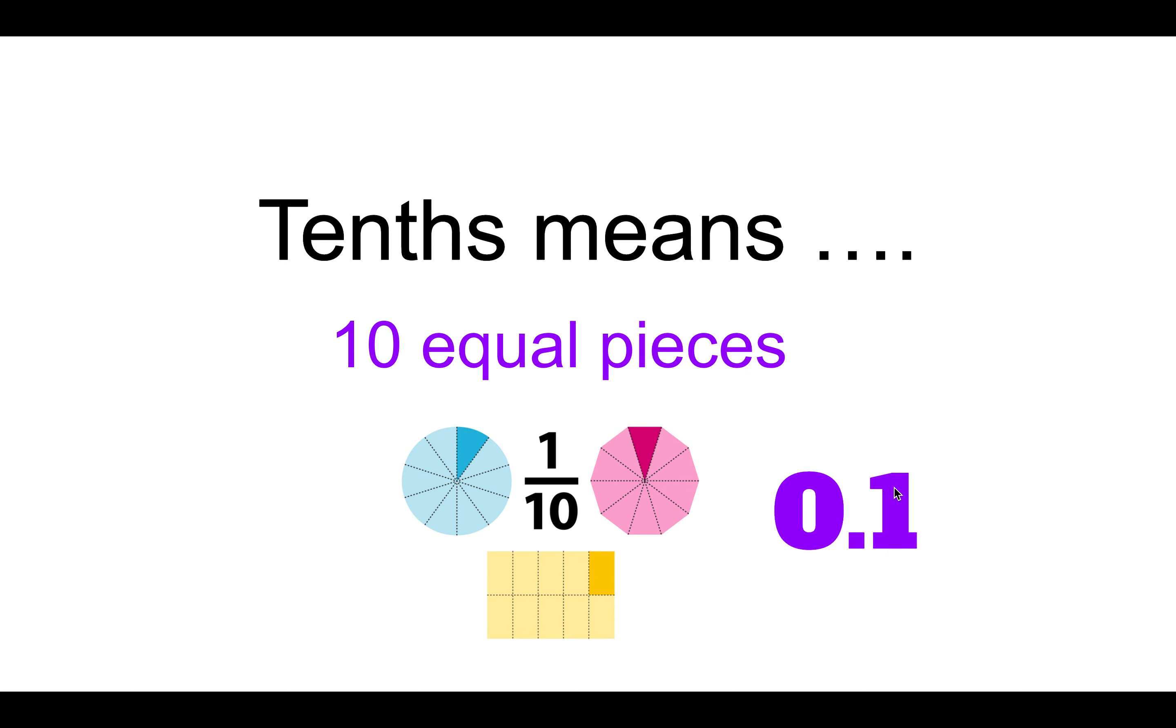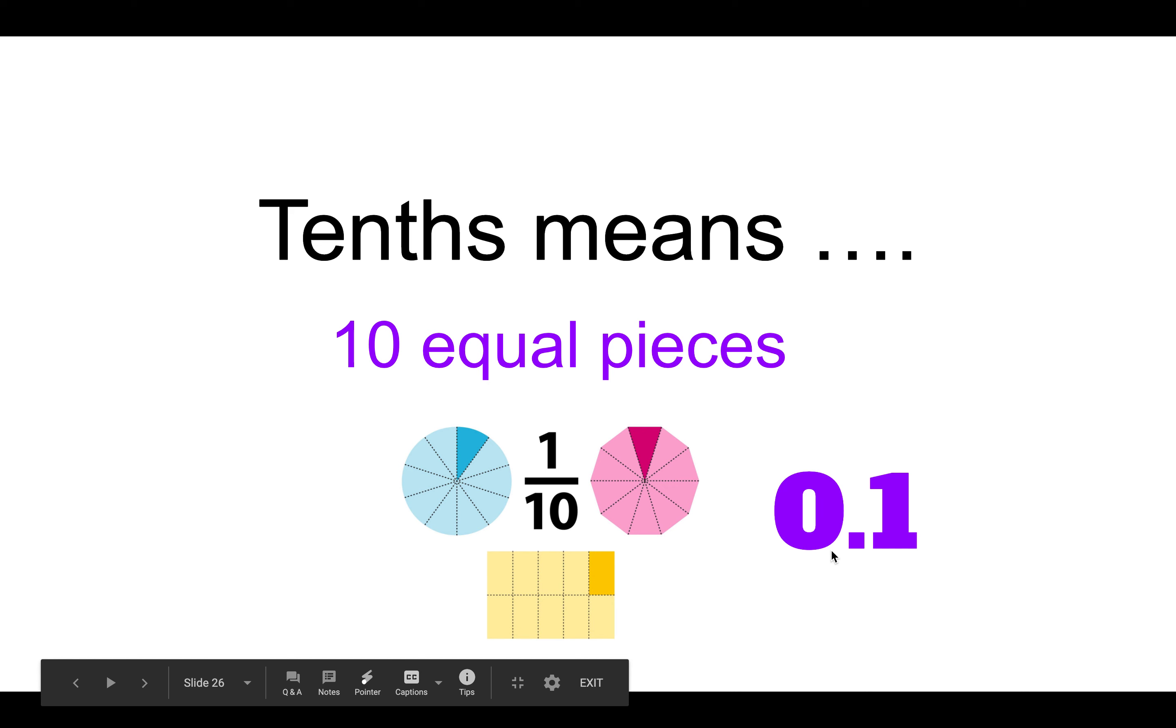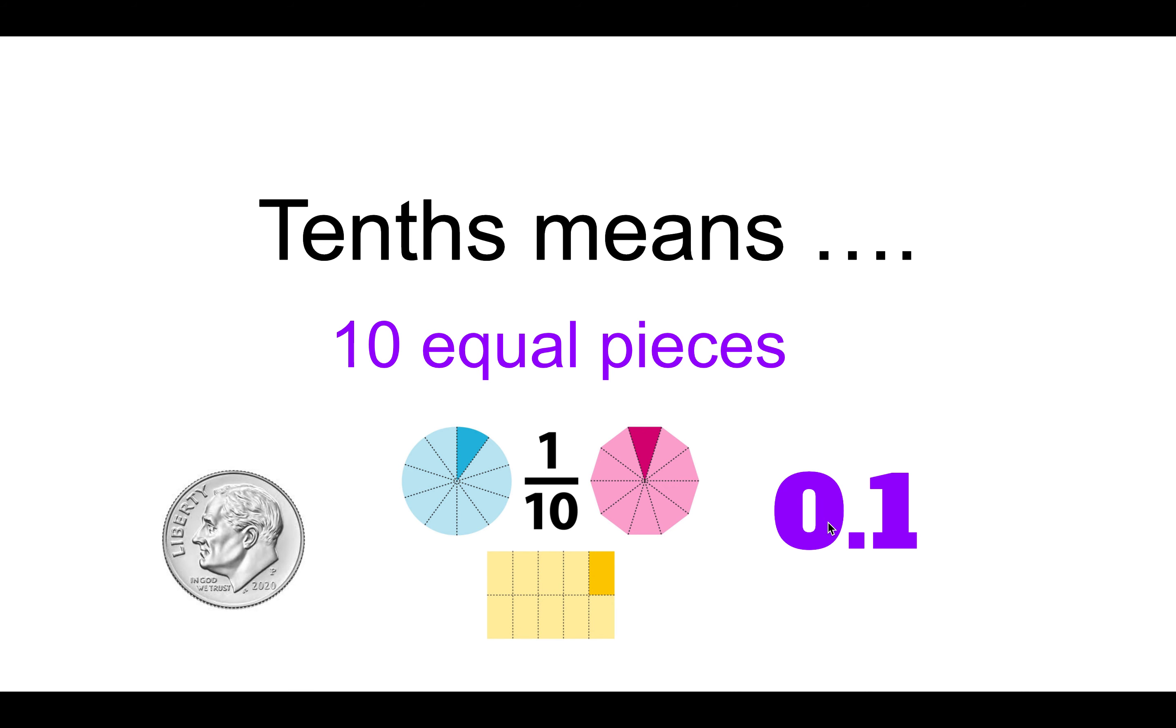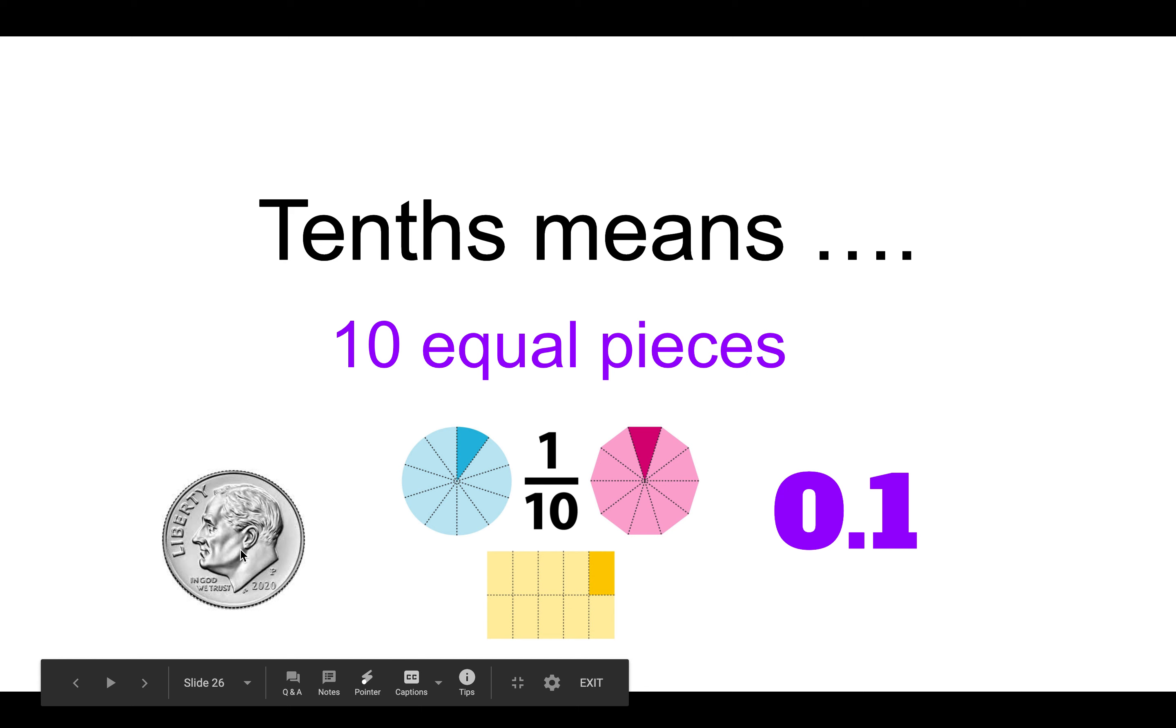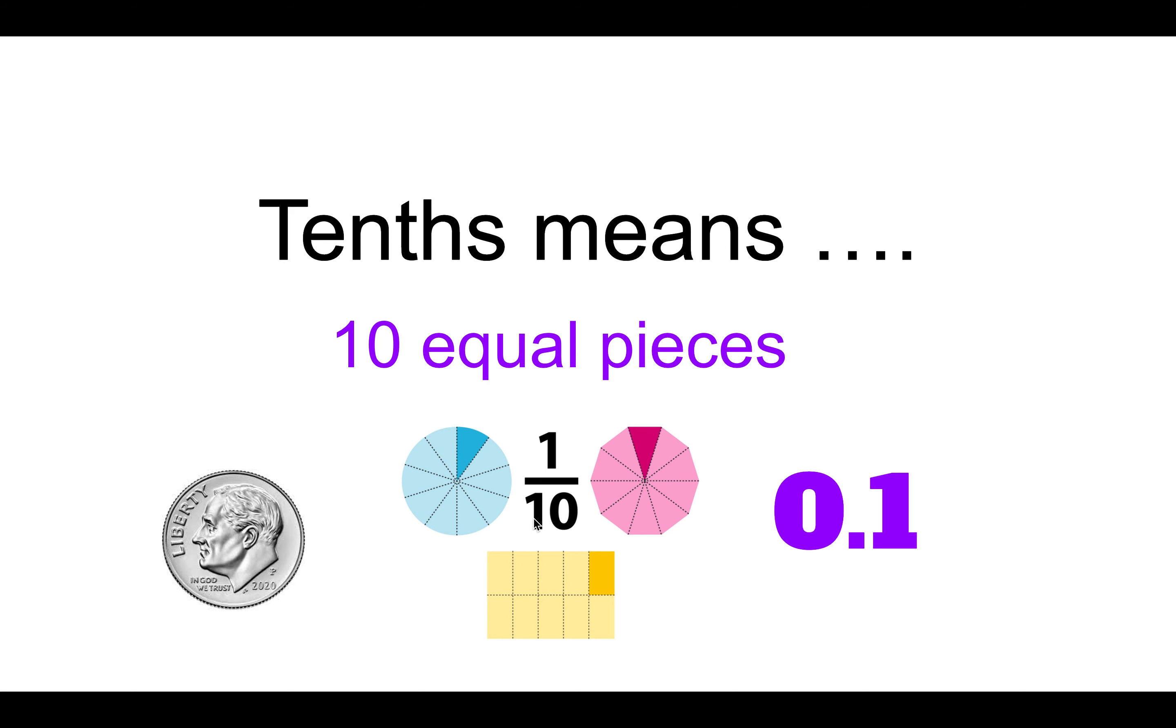So when I write this, this means one tenth. Or for example, this rectangle, this would be one tenth of the rectangle. If I'm talking about money, it would be one tenth of a dollar. So just like this fraction says one tenth, this decimal says one tenth.